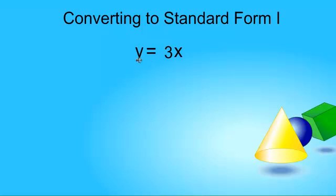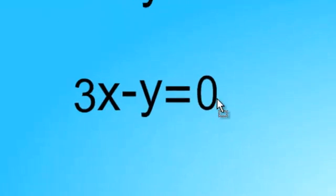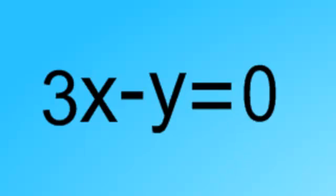We are going to be converting this equation, y equals 3x, into standard form, which means that we're going to start with something that looks like a y equals mx plus b relationship, and we are going to end with something with all the terms on the left-hand side and the term containing the x positive.